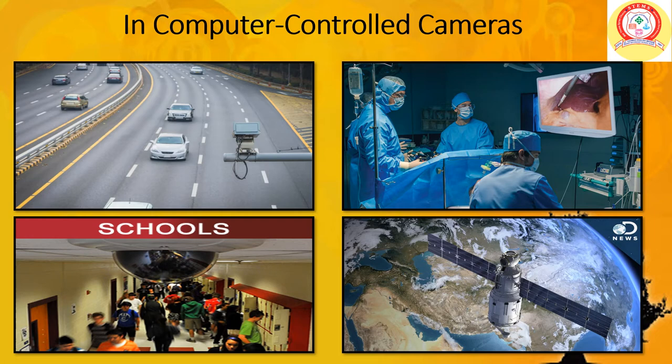Cameras are fixed on satellites that orbit the earth. These cameras take pictures of weather patterns of the earth. Cameras also bring us pictures from the deepest oceans, from the insides of volcanoes and even distant galaxies in space. So, cameras controlled by computers are used in various places.